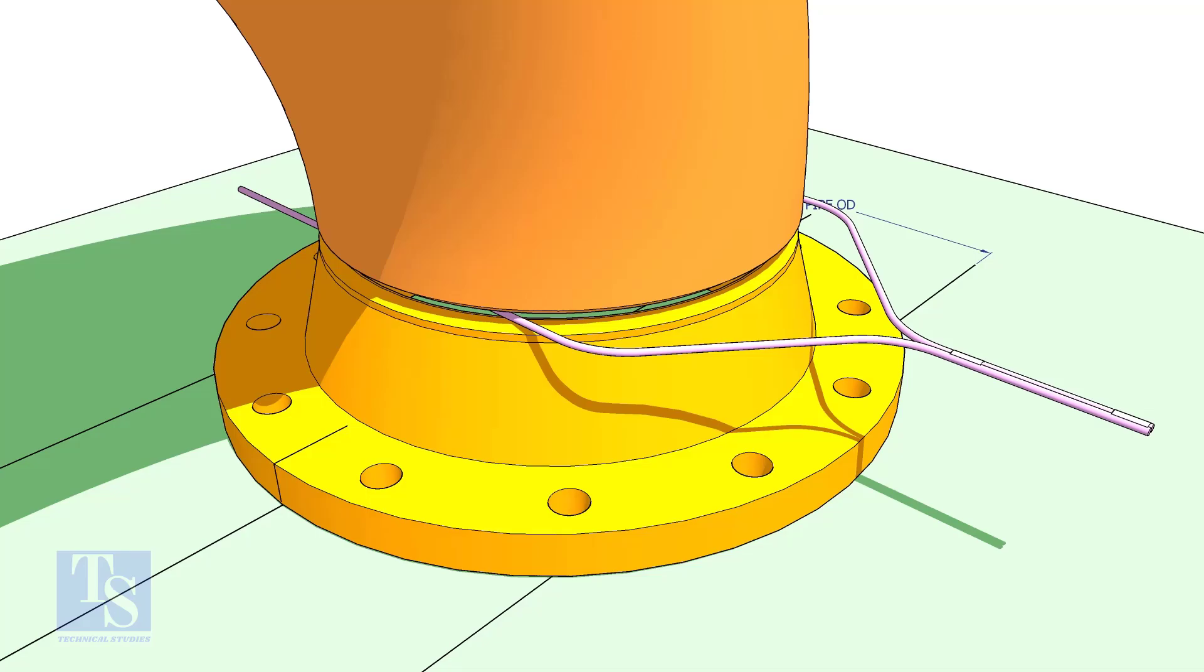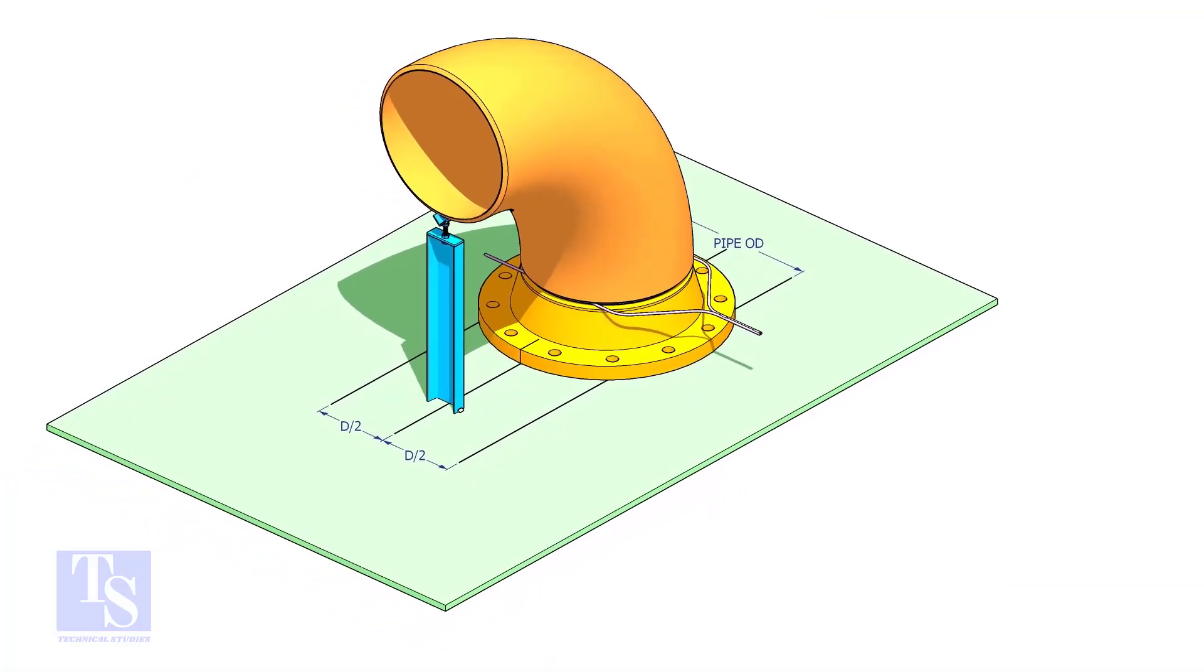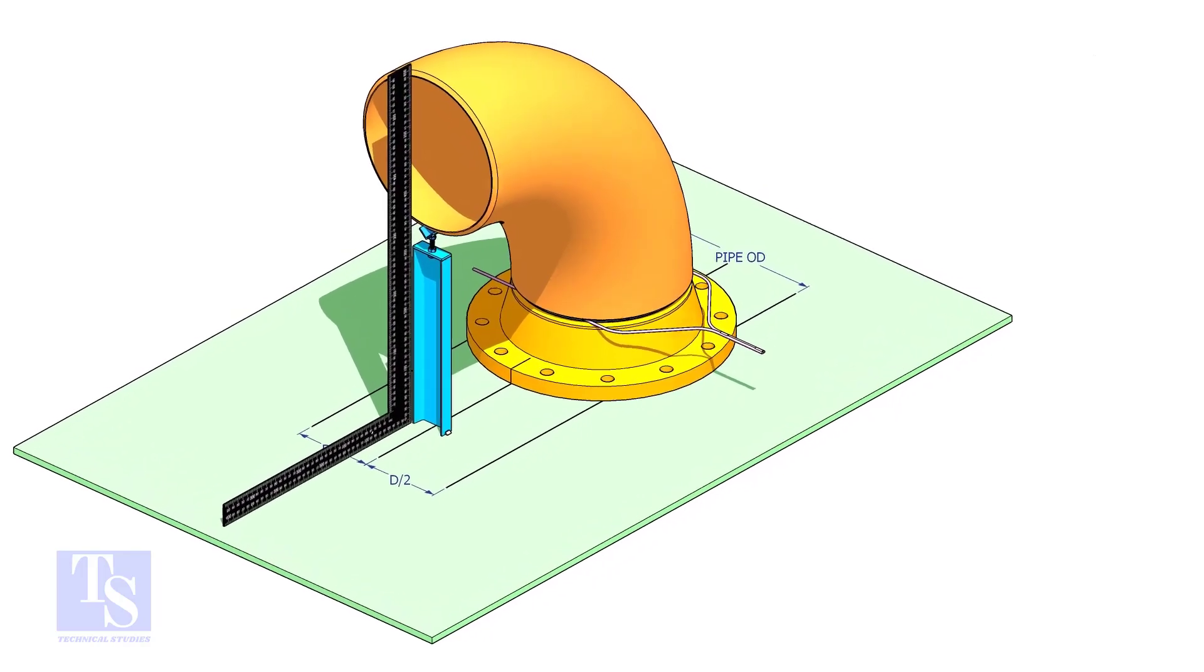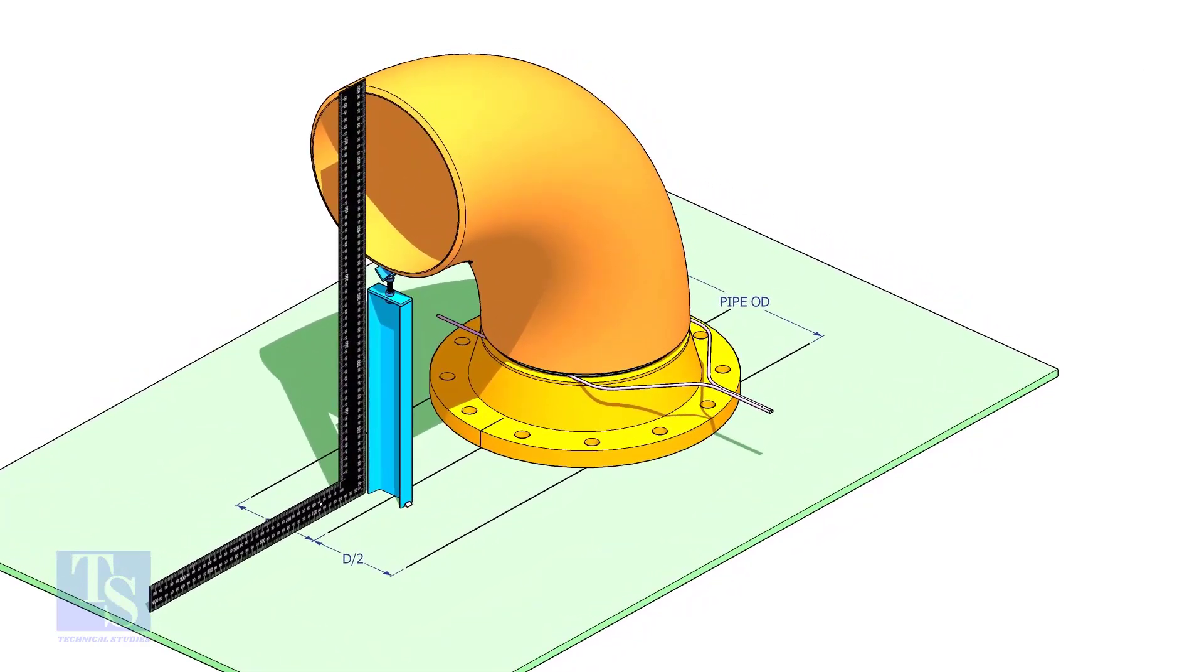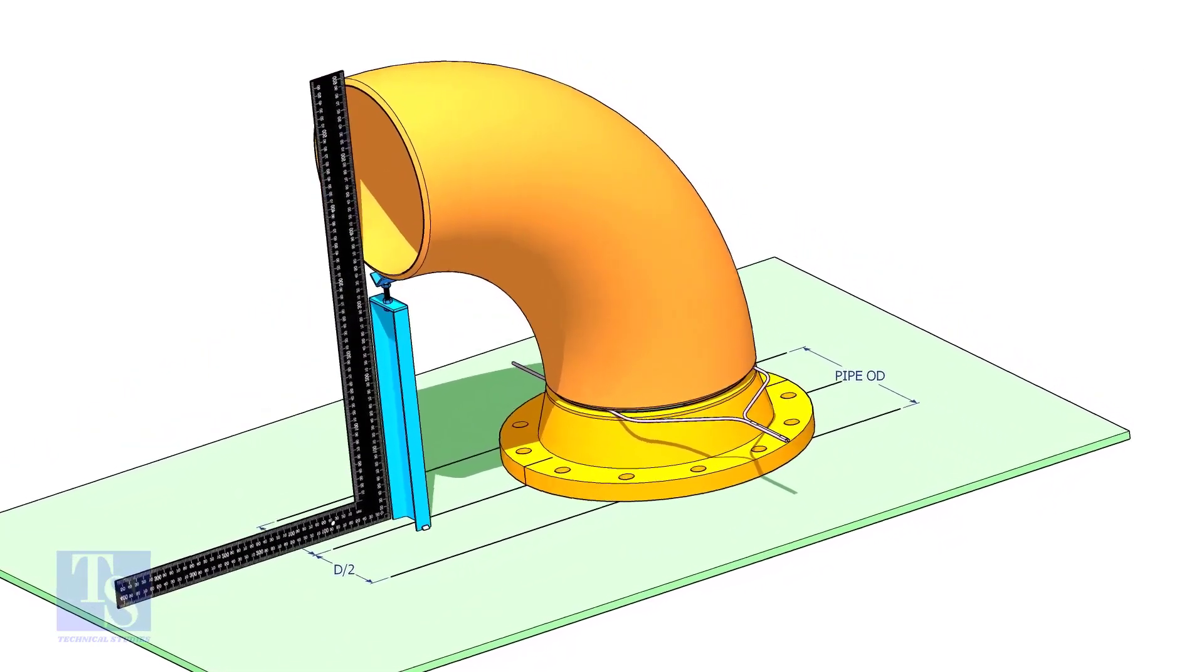If required, make an adjustable support to hold the elbow in vertical position. Make the squareness of the elbow to the plate. The straightness of the plate is a must.